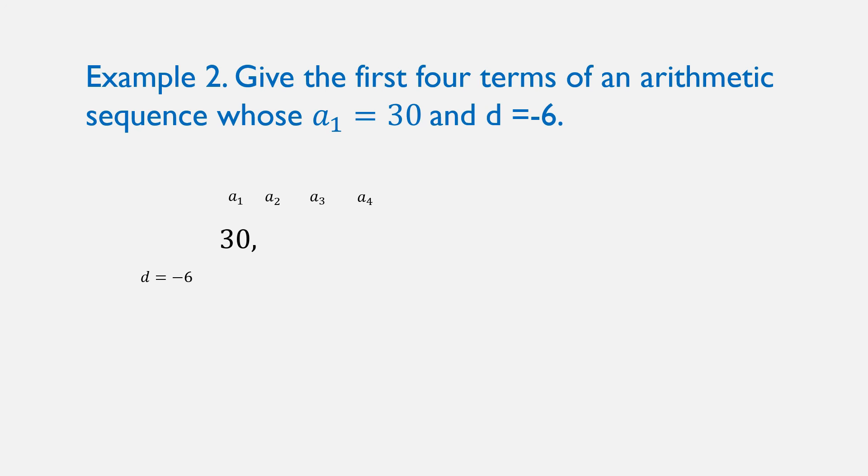Then, prepare slots for every term. Since we have a negative value of D, we are going to subtract that value in every term from the first one. We have 30 minus 6 is 24, 24 minus 6 is 18, 18 minus 6 is 12. And that's it. Our first 4 terms of an arithmetic sequence, whose a1 is 30, and D is negative 6, are the following: 30, 24, 18, and 12.